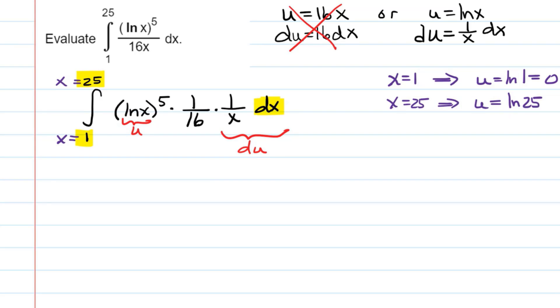So let's make our substitution. We have the integral from u equals 0 when x equals 1 to u equals natural log of 25 when x equals 25 of u to the fifth du. And I'm going to bring that 1 16th out front.